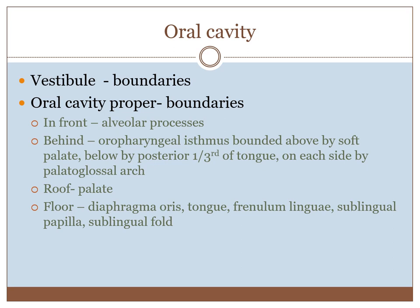The roof of the oral cavity is formed by the palate, which is made up of the hard palate and soft palate. The floor is formed by the diaphragma oris, an oral diaphragm formed by the mylohyoid muscle of both sides. Beneath the tongue is the frenulum linguae, a fold connecting the tongue with the floor of the oral cavity. By the side of it is a sublingual papilla where the submandibular duct opens, and from the papilla there is a sublingual fold where the sublingual ducts open.